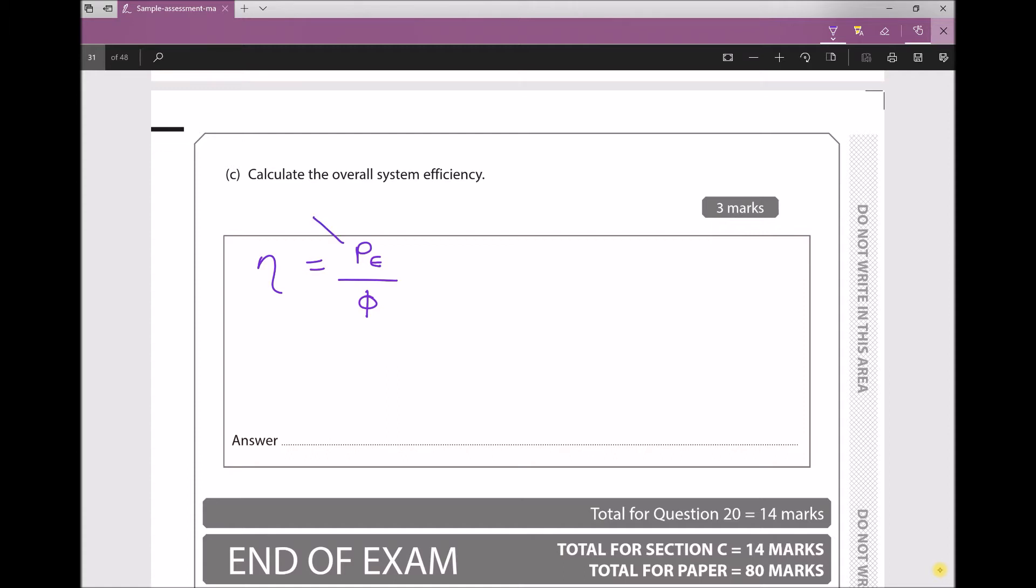And we also said on the previous question, the thing we were trying to get to goes on the top—we're trying to get to electrical power. And the thing we're trying to get from, heat energy, goes on the bottom. And we also said when we calculate efficiencies, we usually express them as a percentage. Well, we already know Φ. We calculated Φ previously and it came out as 120 kilowatts.